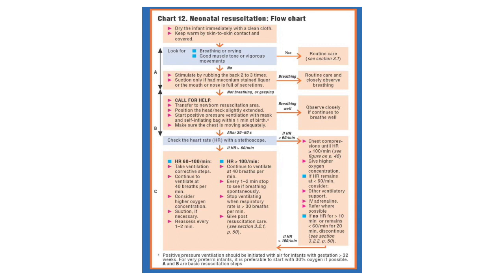If after rubbing the back the baby continues not to breathe, gasps, or has low tone, call for help. Move to a resuscitation area, position the head and neck slightly extended. Start positive pressure ventilation with a mask and self-inflating bag within one minute, ensuring the chest is moving adequately. After 30 to 60 seconds, check the heart rate with a stethoscope. If it's less than 60 beats per minute, proceed with chest compressions until above 100, and give more oxygen if available. If the heart rate remains below 60 after a minute of compressions, consider other ventilatory support, IV adrenaline, and refer where possible.